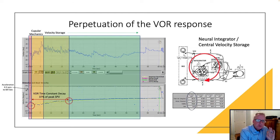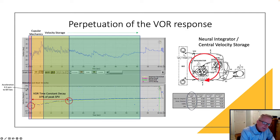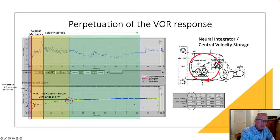We're asking how much perpetuation of the VOR response do we have. In response to the peak VOR that occurred just immediately post-acceleration, you get this peak nystagmus response and almost an immediate decay. At what point in time does it decay to 37% of that peak value? That's known as the VOR time decay response.